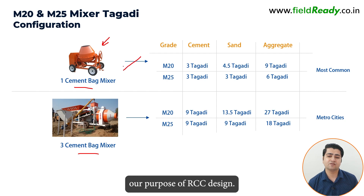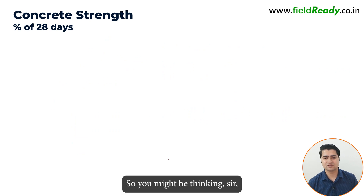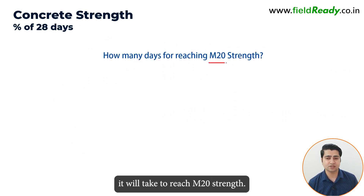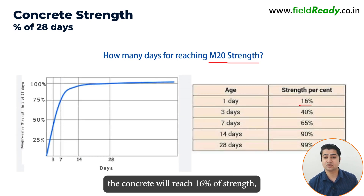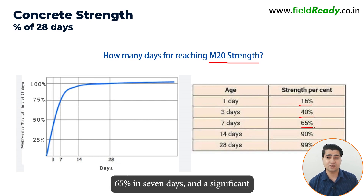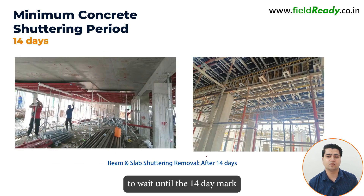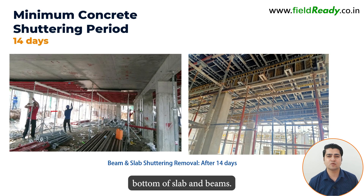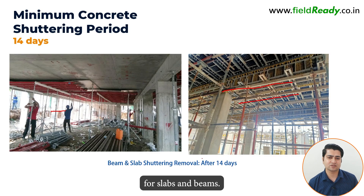Otherwise, every batch of concrete coming out of this machine will be of different strength, which will completely defeat our purpose of RCC design. As we all know, concrete gains strength with time. In just 1 day, the concrete will reach 16% of its strength, followed by 40% strength in 3 days, 65% in 7 days, and a significant 90% strength by the end of the 14th day. This is why we always advise contractors and clients to wait until the 14th day mark before removing the bottom of slabs and beams. Removing them too early can lead to cracks and settling in the concrete. Therefore, a 14-day curing period is essential for slabs and beams.